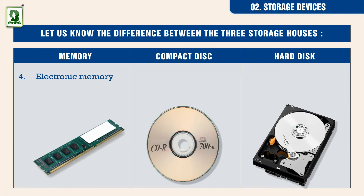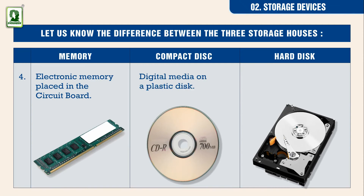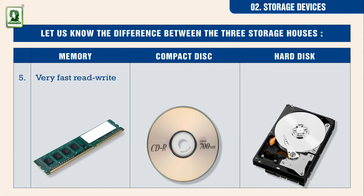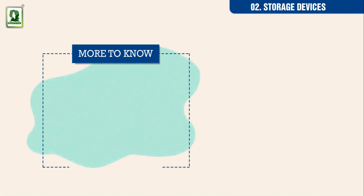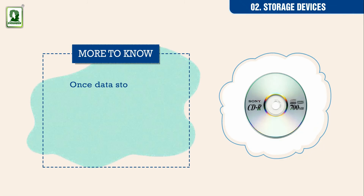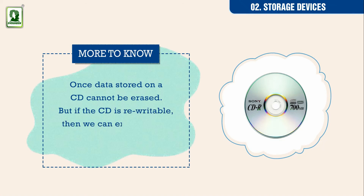Memory is electronic memory placed on a circuit board. A compact disk is digital media on a plastic disk. A hard disk is magnetic memory available on a metallic disk. Memory has very fast read-write speed; a compact disk also has fast read-write speed; a hard disk is faster than a CD but slower than electronic memory. More to know: once data is stored on a CD it cannot be erased, but if the CD is rewritable, then we can erase the old data and write new data.